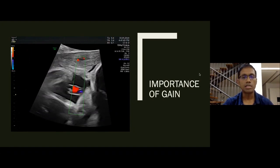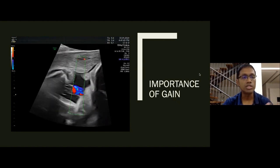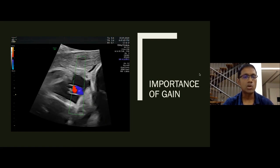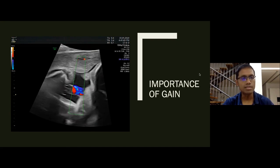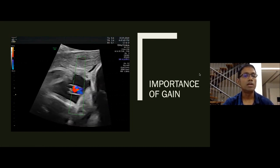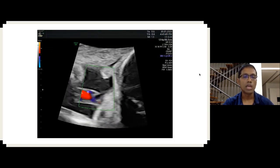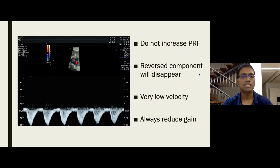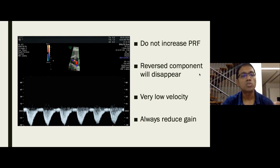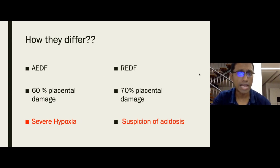The second important point is adjusting gain, not PRF, when differentiating absent from reversed end-diastolic flow. When you see excessive color bleeding, the natural tendency is to increase PRF — but that will completely eliminate the small flow present in reversed end-diastolic flow. Instead, drop your gain. You can then clearly see red and blue alternating, and the trace reveals reversed end-diastolic flow. Note that the peak systolic velocity in reversed end-diastolic flow is extremely small and can disappear if PRF or wall motion filter is too high.